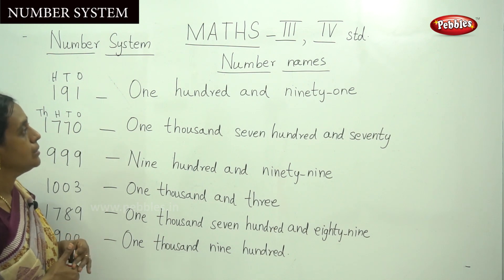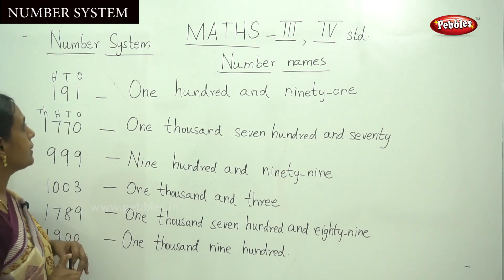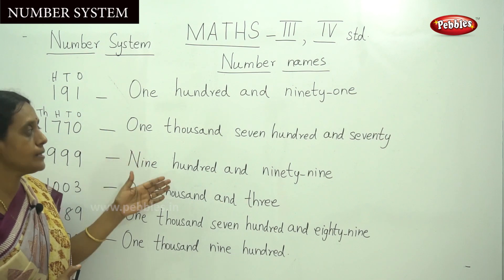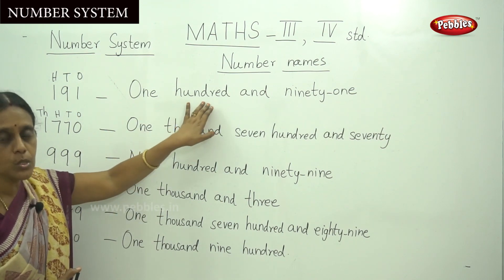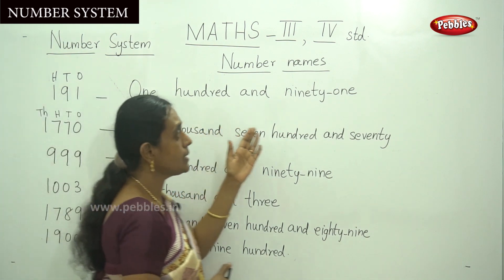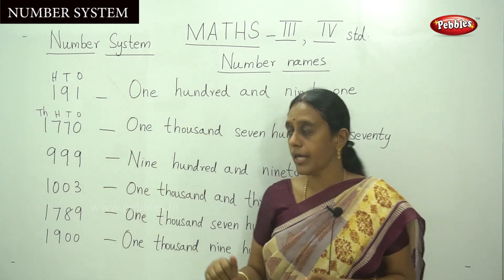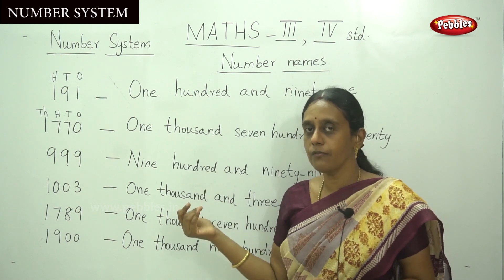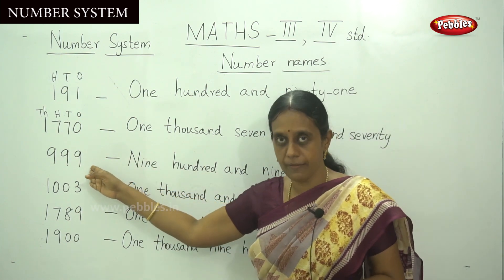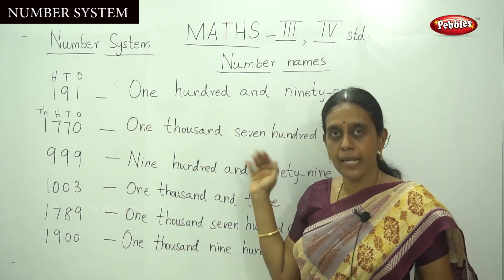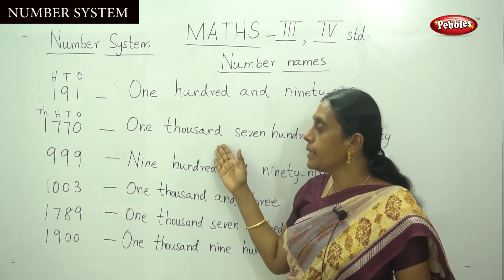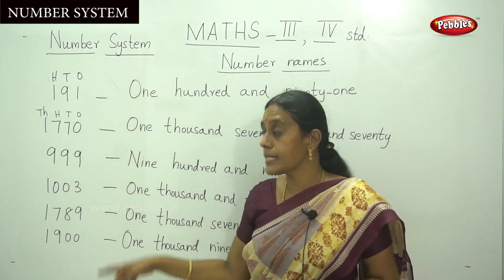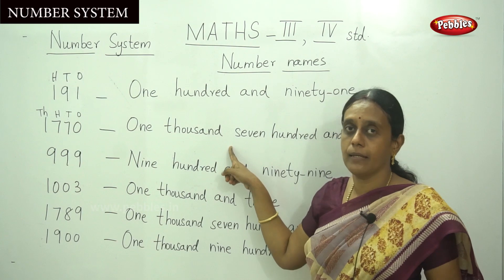You should write down the number names when given the numerals. Numerals are given and you write down the number name. Similarly, another question pattern: number names are given and you have to write the numerals. You have to read the number names and write down the numerals. So there are two kinds of questions: numerals given — write the number name spelling; or number names given — write down the numerals.